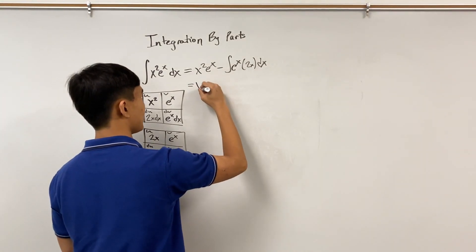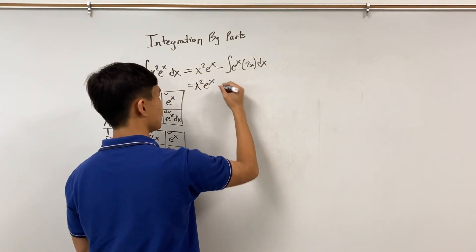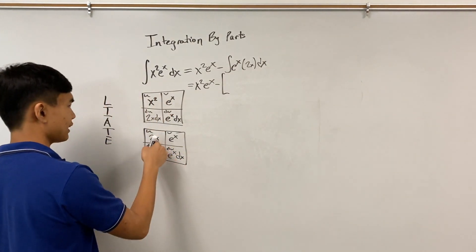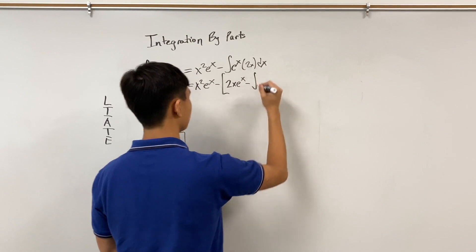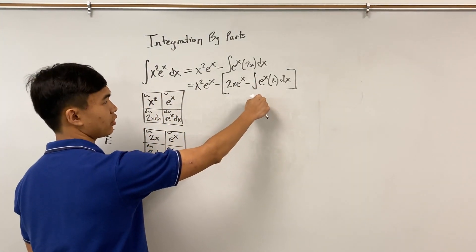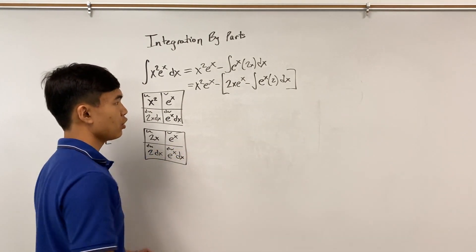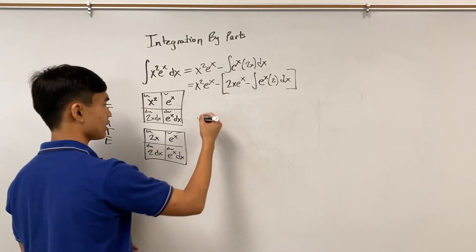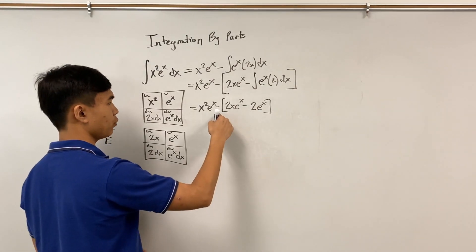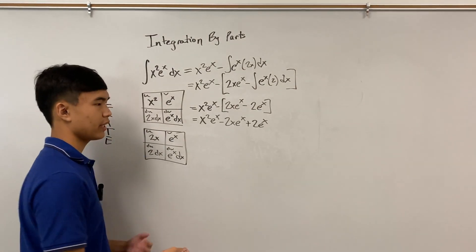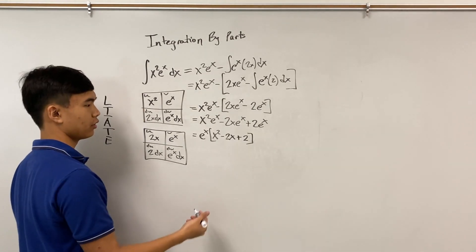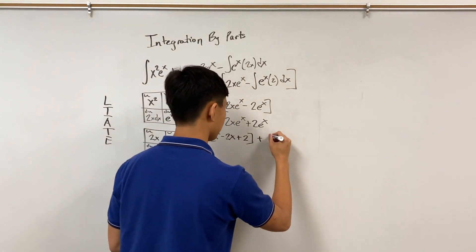Applying the formula again, we keep x²eˣ and then subtract. In the bracket we have the second uv minus the integral of v du, which is just the integral of 2eˣ, equaling 2eˣ. Distributing the negative and optionally factoring out eˣ gives us the final simplified answer. Don't forget your plus C.